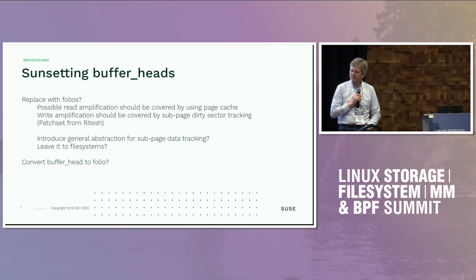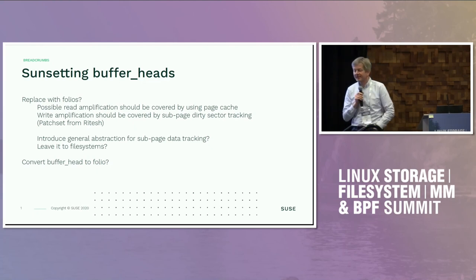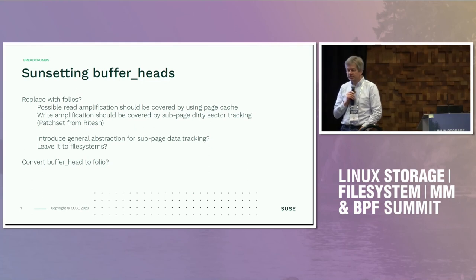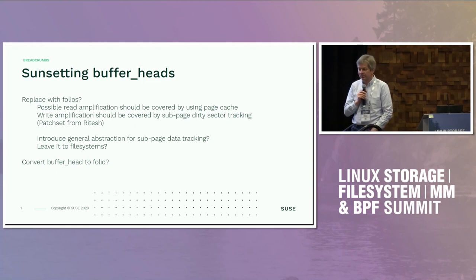Filesystems use it - for example simple filesystems like FAT but also ext2 and UDF use the possibility to associate buffer heads with an inode. That's one of the darker corners of buffer heads. And on fsync they use this list of metadata blocks. So essentially what we do is we are just dirtying individual folios.